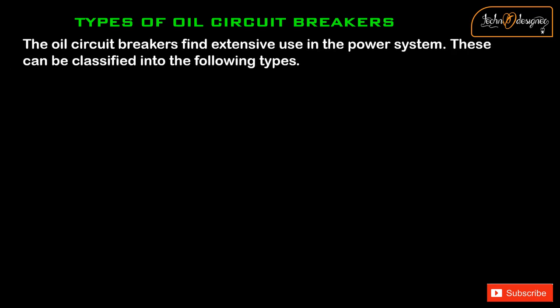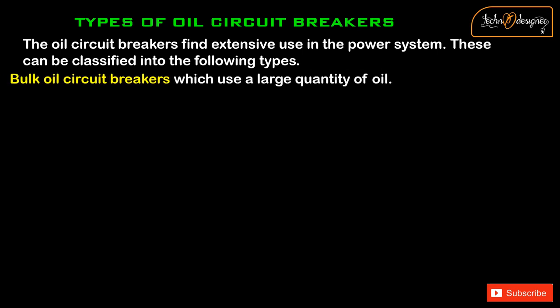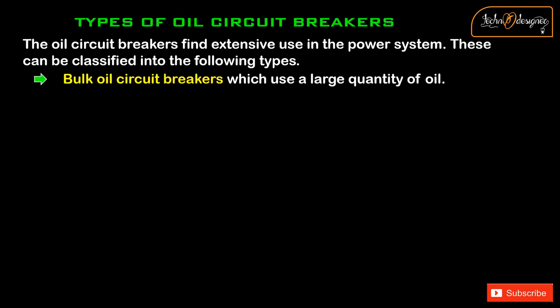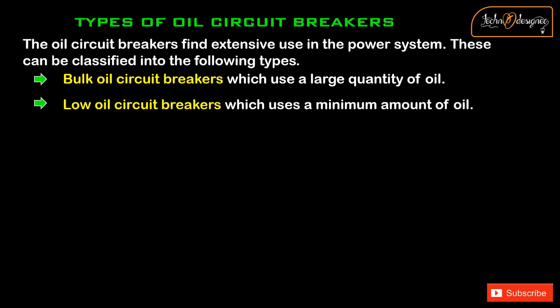Types of oil circuit breakers: Oil circuit breakers find extensive use in the power system and can be classified into the following types. Bulk oil circuit breakers, which use a large quantity of oil, and low oil circuit breakers, which use a minimum amount of oil.